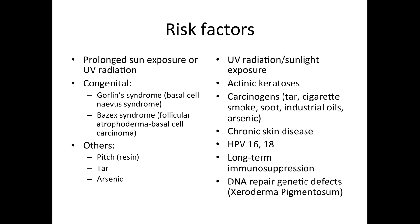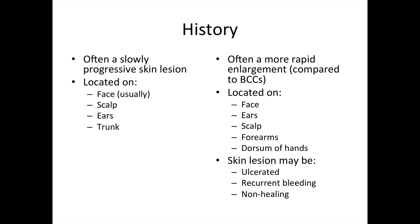HPV infection and long-term immunosuppression are risk factors specific to SCCs. There are lots of similarities between SCCs and BCCs in the history. However, SCCs often grow more rapidly than BCCs. On exam questions, SCCs tend to grow more on lips, forearms, and dorsum of the hands, while BCCs tend to grow more on the face, scalp, and ears.